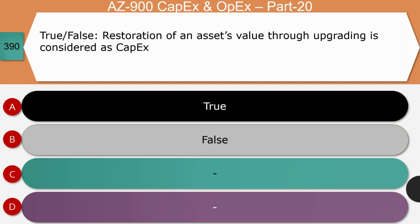True or false: Restoration of an asset's value through upgrading is considered as CapEx. The right answer is true. Fixing asset issues means either maintaining an asset, altering it to work efficiently, or replacing spare parts. If the asset is altered, improved, or replaced, the expenditure is capital expenditure — that is one debated topic.